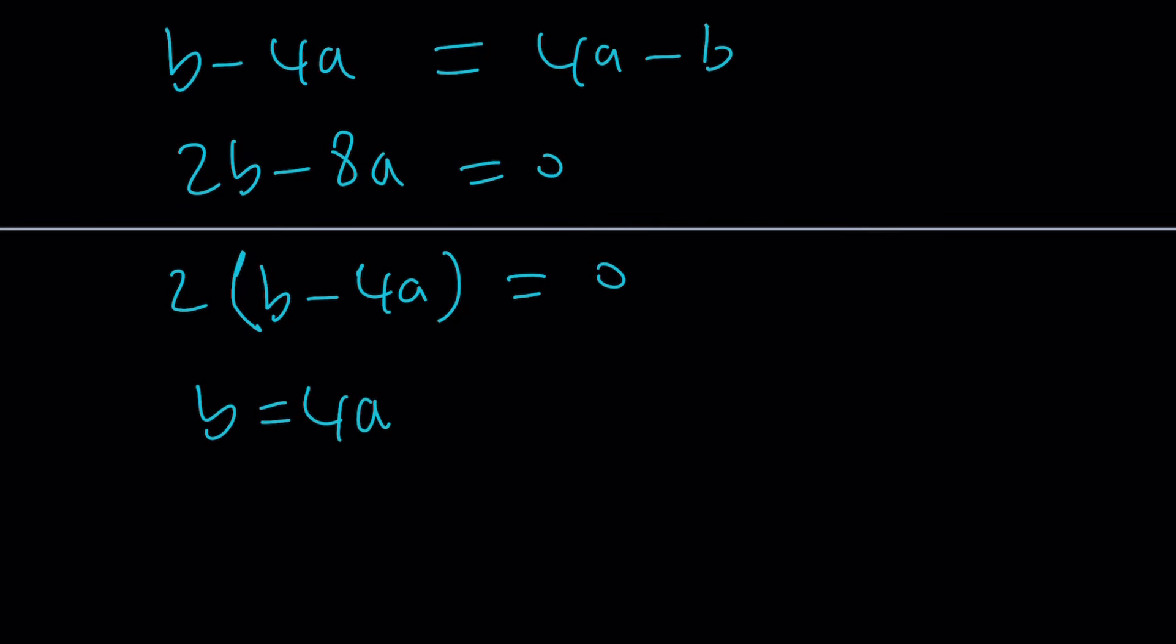What does that mean though? We were looking for A and B so we found it, but we actually found the relationship B equals 4 A. So for a given A we can find the B.